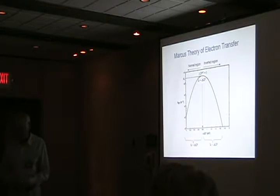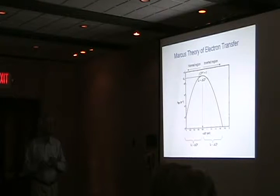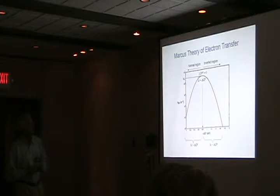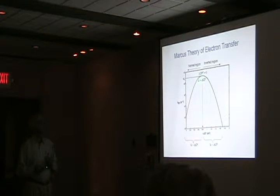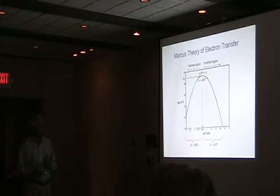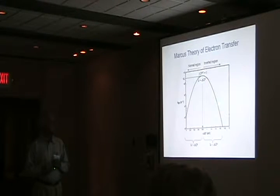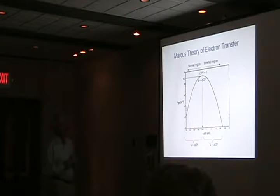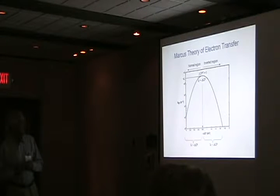Basic stuff: if you plot out that equation, you have three regions. There's a region where electron transfer occurs at maximum rate, determined by that A value — the pre-exponential — with no activation energy, where lambda equals minus delta G-naught. Then we have the so-called normal region of the Marcus curve, where increasing the thermodynamic driving force increases the rate, like most chemical reactions. And then we have this unusual inverted region where increasing the driving force decreases the rate. That's the part nobody believed for a long time, but back in the mid-1980s it was demonstrated, and there have been other examples since.